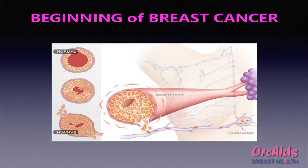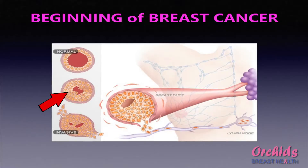The next step in the genesis of cancer is that these cells increase in size and number due to some sort of irritation that triggers the start of breast cancer. When these ductal cells remain within the basement membrane or the wall of the duct, this is known as Stage 0 of breast cancer — the precancerous stage.